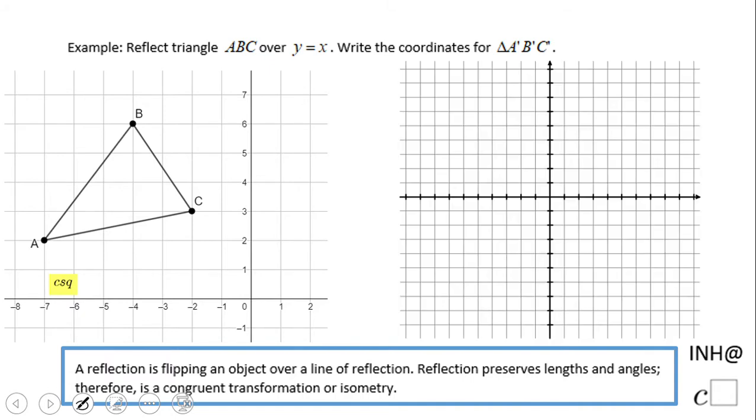So, first of all, let's take a look at y equals x, this line. That means when x is 1, y is 1, when x is 2, y is 2, when x is 0, y is 1, and so on, right?